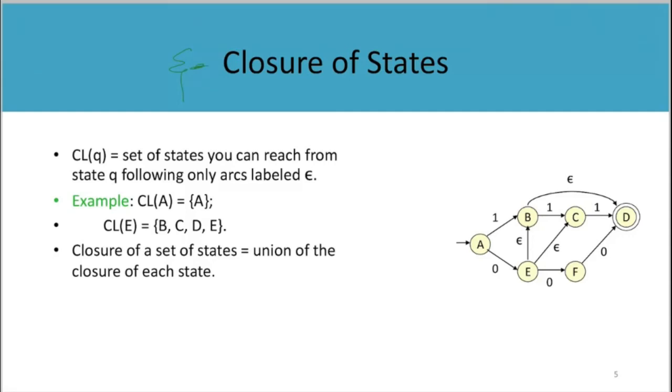So CL(Q)—this closure of state Q—is the set of states you can reach from state Q following only arcs labeled by epsilon. This concept we already have from our previous day's discussion.